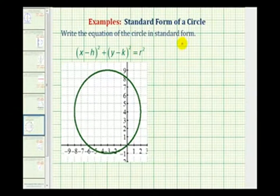We want to write the equation of the circle in standard form, which is the form given here. When we have the equation of a circle in standard form, the center of the circle is given by the point with coordinates h, k, and r is equal to the length of the radius.